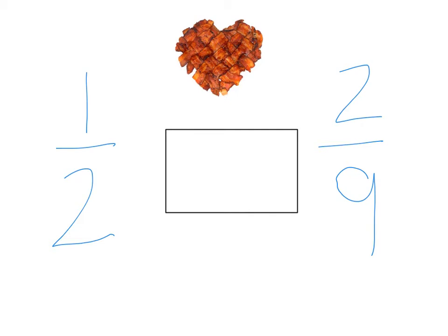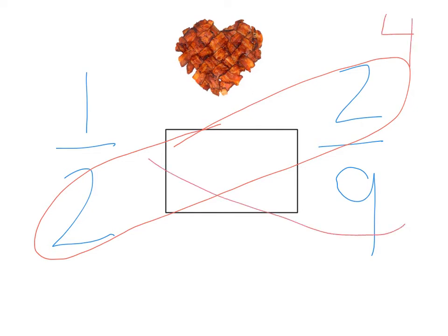So, in the butterfly method, what you do is you circle diagonally. And then you're going to multiply. So, you do two times two, and that gives you four, and you write that right above that one wing. Then you circle diagonally again.